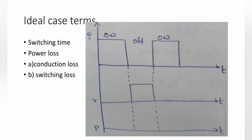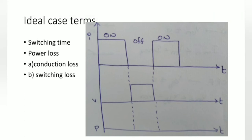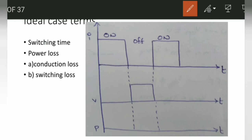Now we look at ideal case terms. The first is switching time — the time taken to change state from ON to OFF or from OFF to ON. For the ideal case, the switching time is equal to zero, as you can observe in the diagram — transitions happen instantaneously.